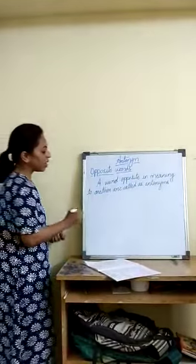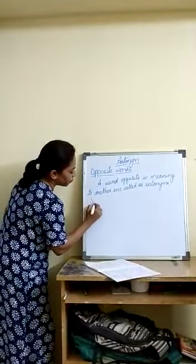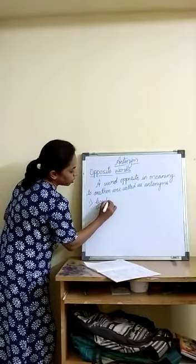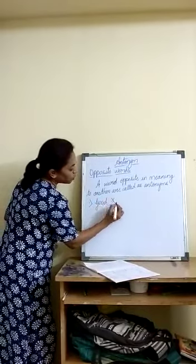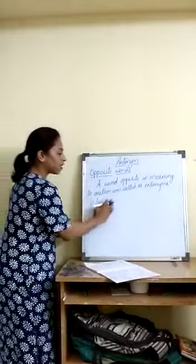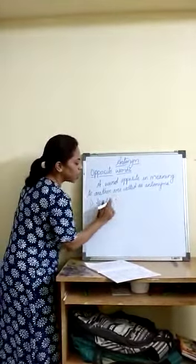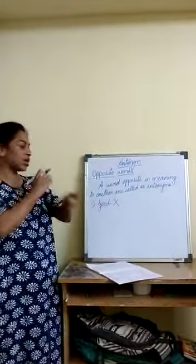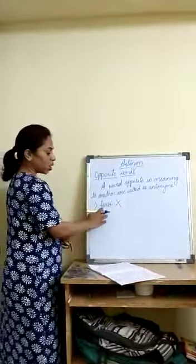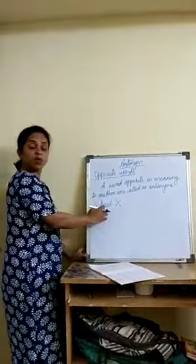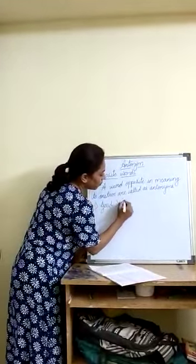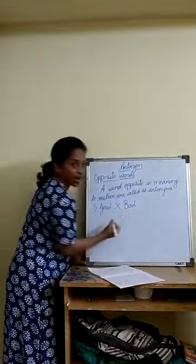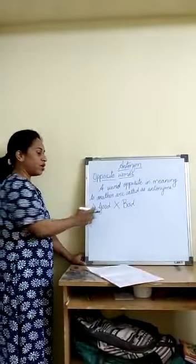So we will see the first example. First is 'good'. What is the opposite word? This sign means opposite. The opposite of 'good' is 'bad'. Good — bad.